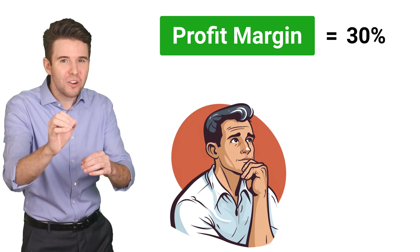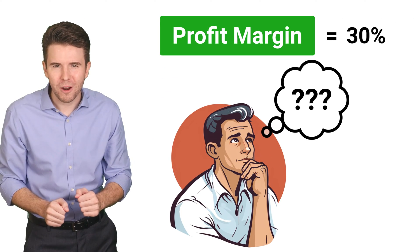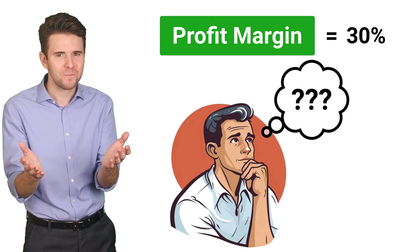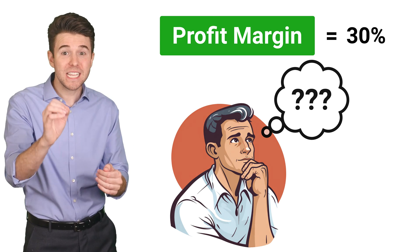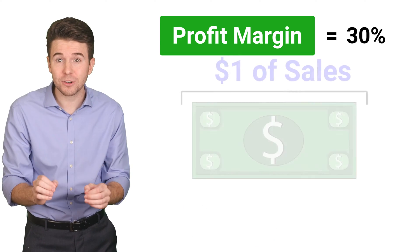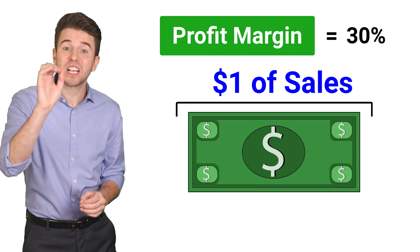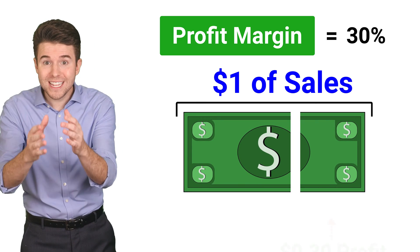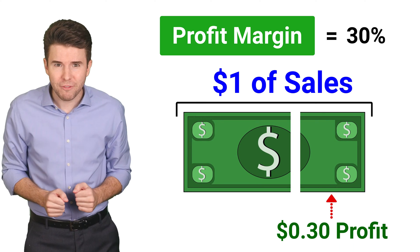Now what does a 30% profit margin tell us about this company? It means that for every dollar in sales, the company is generating 30 cents in profit.